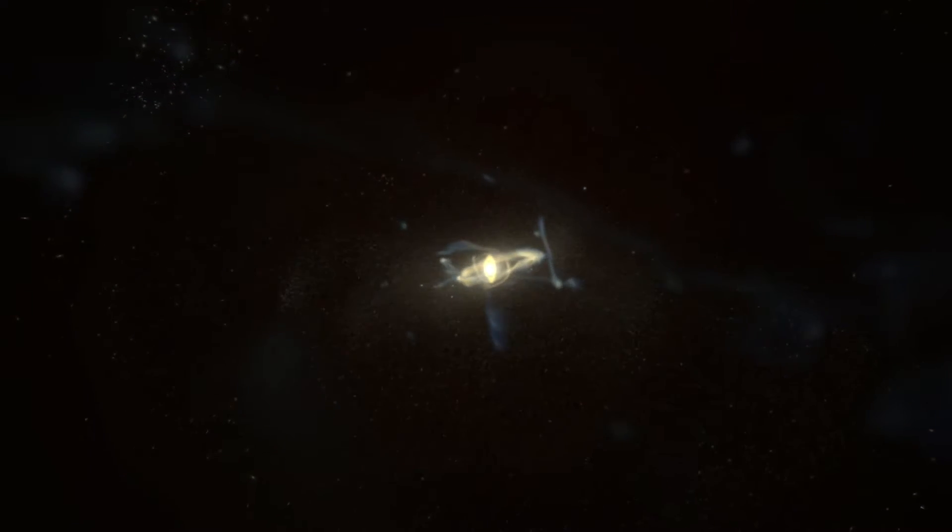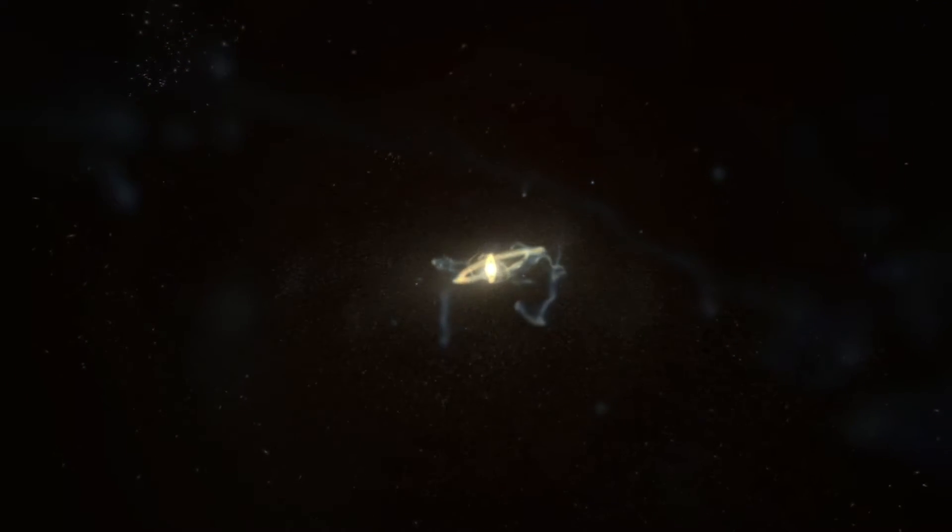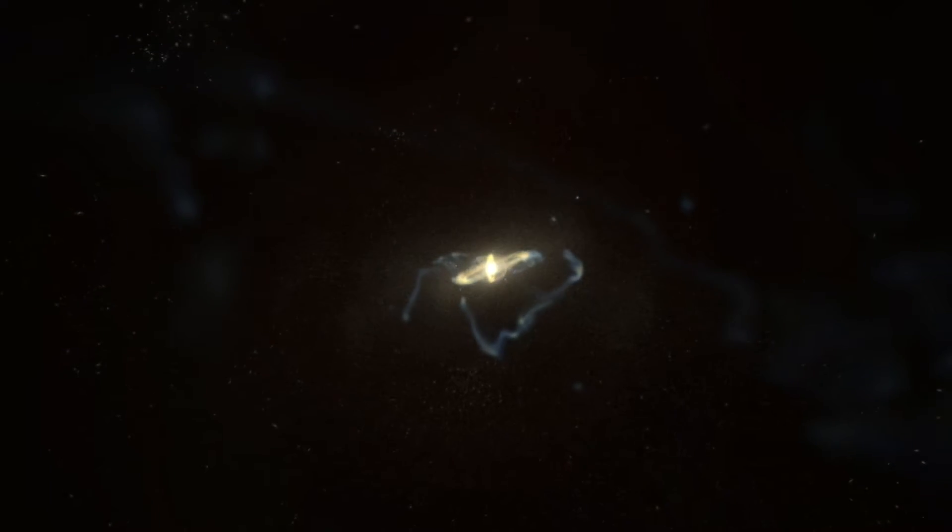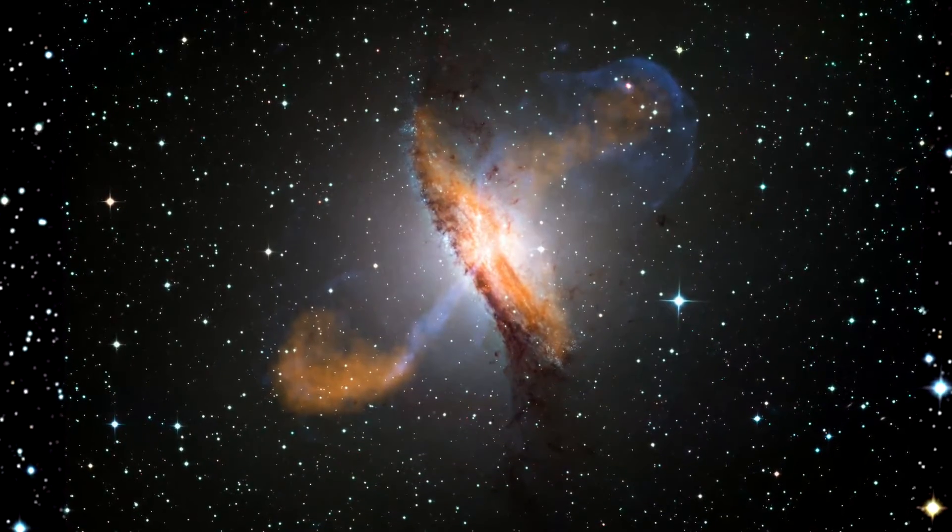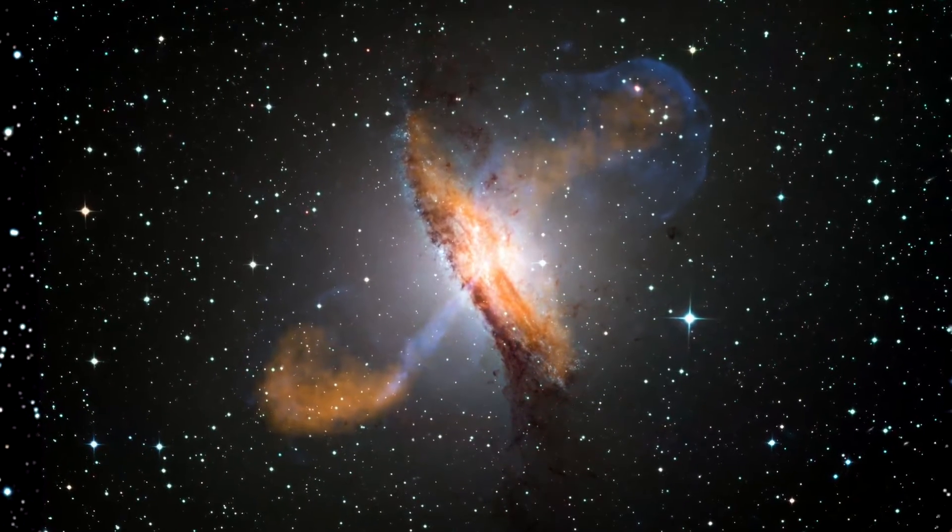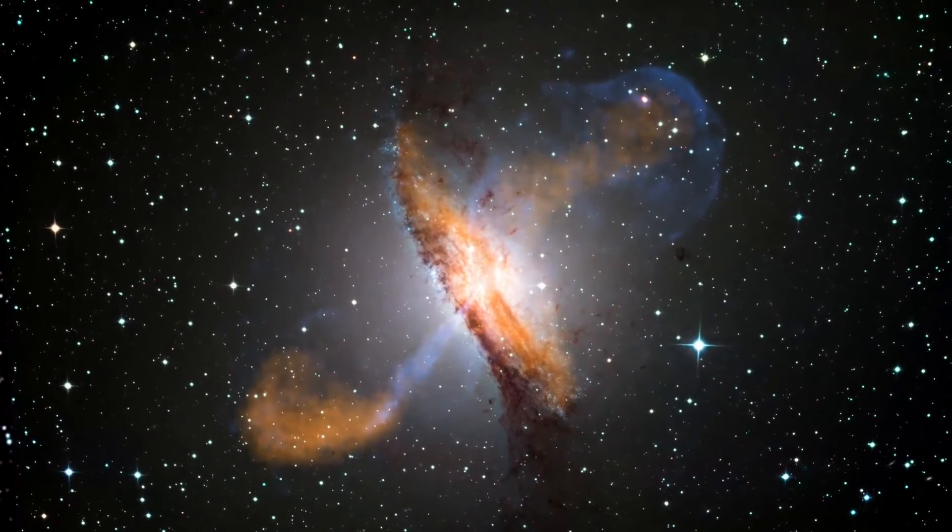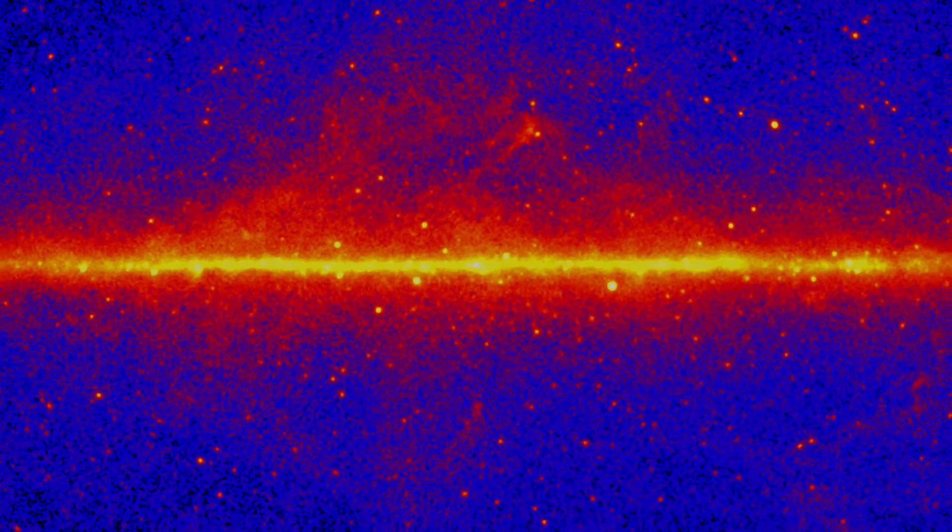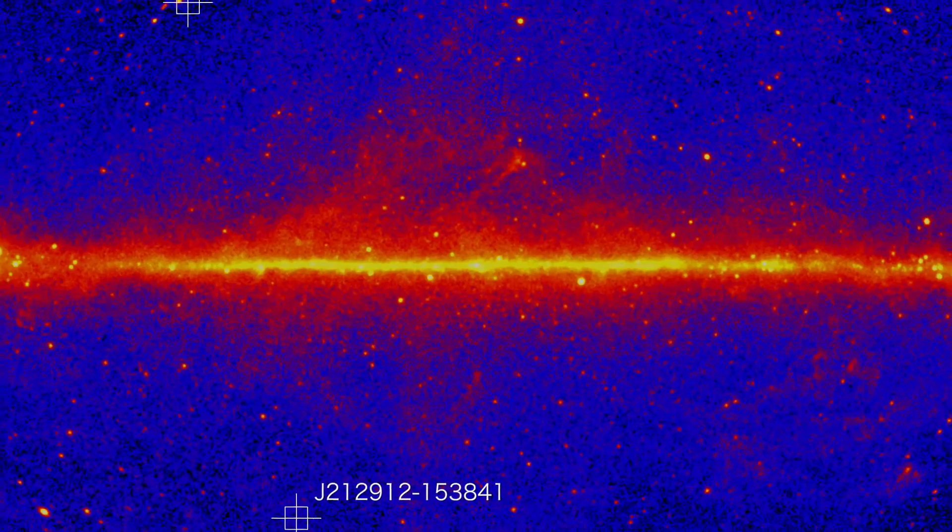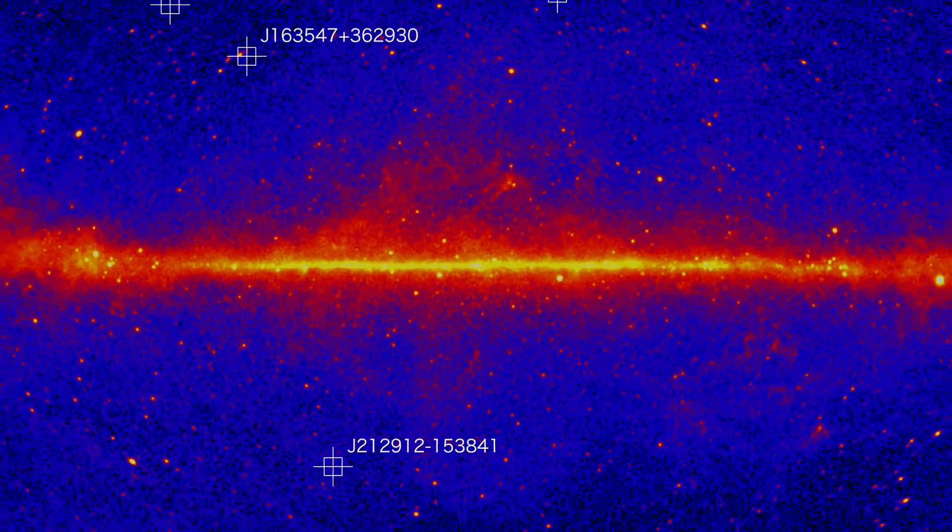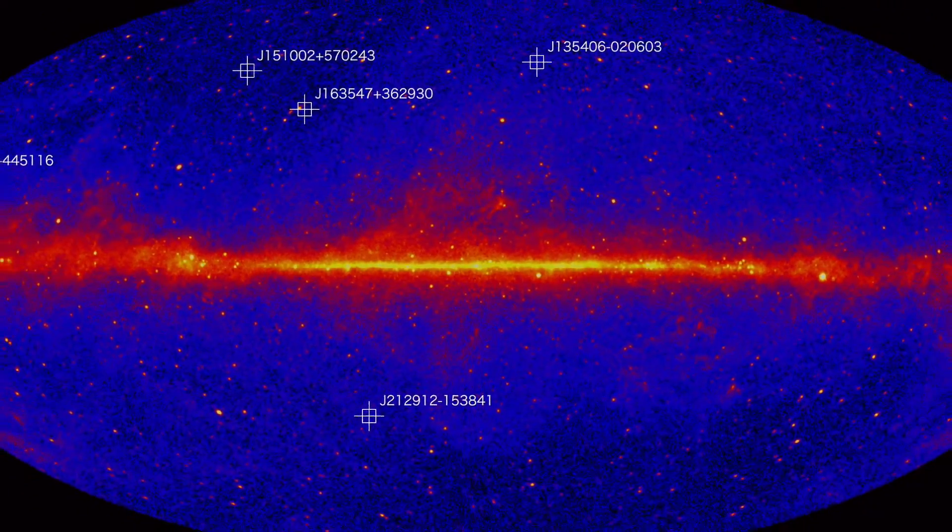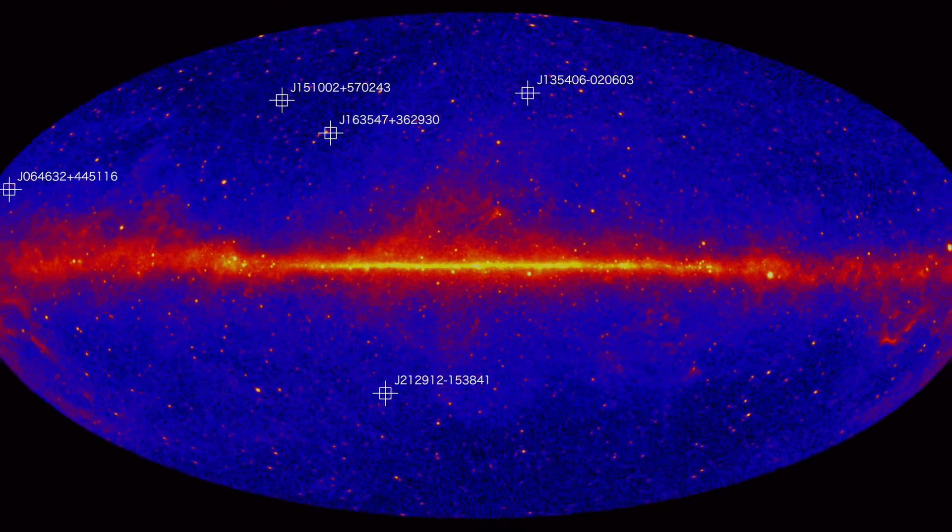But after netting five of these extreme blazars, researchers hope to find more of them in Fermi data. These objects allow scientists to map out how the most powerful jets in the universe evolved over cosmic timescales. And scientists hope that additional examples will help them better understand how supermassive black holes develop so rapidly in the early universe.